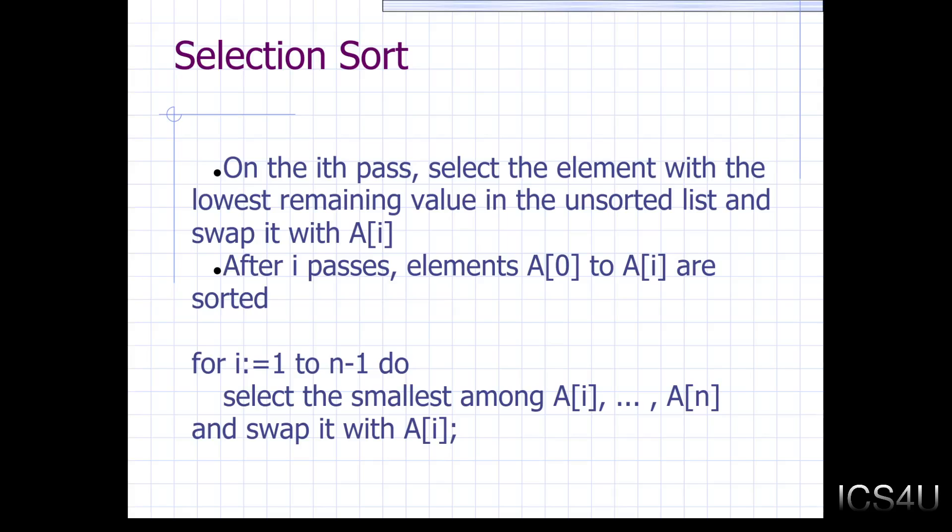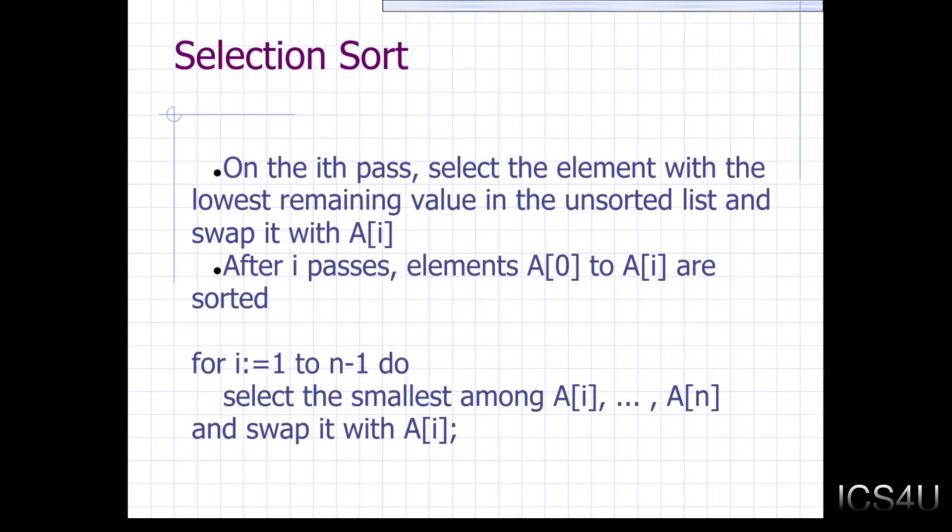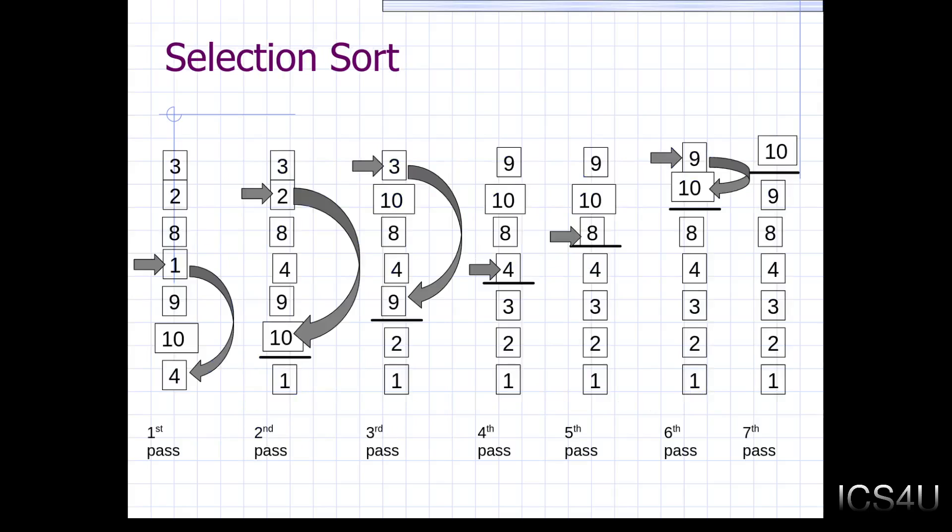Selection sort. This is new. So selection sort works a bit differently where on the ith pass, we're going to select the element with the lowest remaining value from the unsorted list. So we look through the entire unsorted list to the right of the partition or above the partition. And we're going to take that lowest value and put it right next to the partition below it. So let's take a look at how this works.